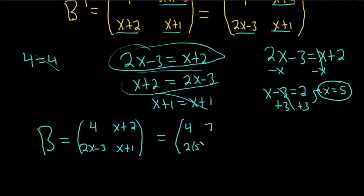I'll show the work here. 2 times 5 minus 3, and then 5+1. I skipped a step there. 5+2 is 7. So this is equal to 4, 7. 2 times 5 is 10. 10 minus 3 is 7. And then 6. And so that would be the final answer.